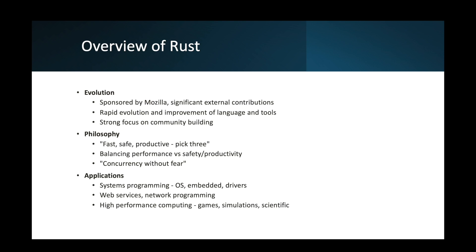For its evolution, Rust was initially sponsored by Mozilla with significant external contributions. Mozilla pays the core team, but much work is done by the community, allowing for an open development model. There's also rapid evolution and improvement of language tools, with breaking changes routinely introduced. The Cargo toolchain is rapidly being improved. There's also a strong focus on community building with an inclusive, pragmatic philosophy.